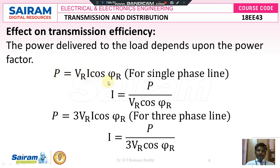Similarly, we can express the formula for power for a three-phase transmission line. For three-phase, with respect to three conductors, we multiply the single-phase formula by 3. Therefore, P equals 3·Vr·I·cosφr, where φr is the phase angle between receiving end voltage and its current. In the case of a three-phase transmission line, the current I equals P divided by 3·Vr·cosφr.